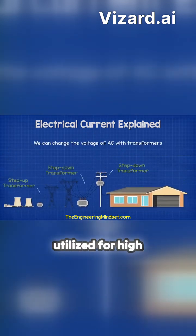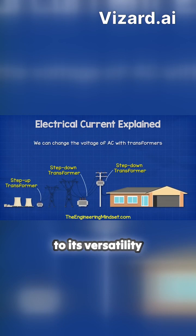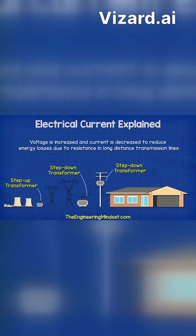AC is predominantly utilized for high-voltage transmission due to its versatility in adjusting voltage levels, making it suitable for long-distance transport, a key feature of modern electrical grids.